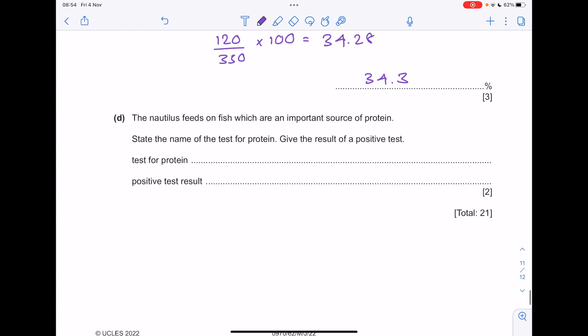The nautilus feeds on fish, which are an important source of protein. State the name of the test for protein and give the result of a positive test. You need to use biuret reagent, and if protein is present it should turn purple.